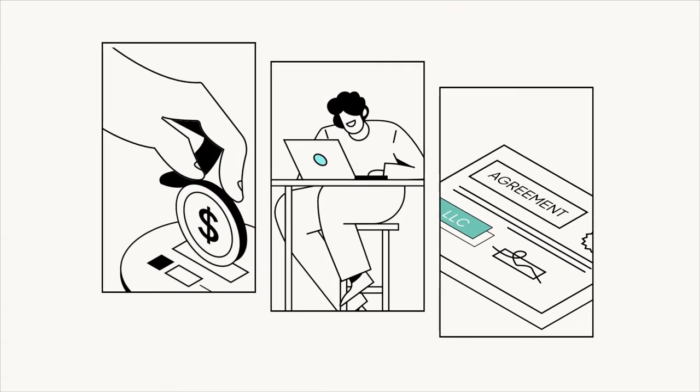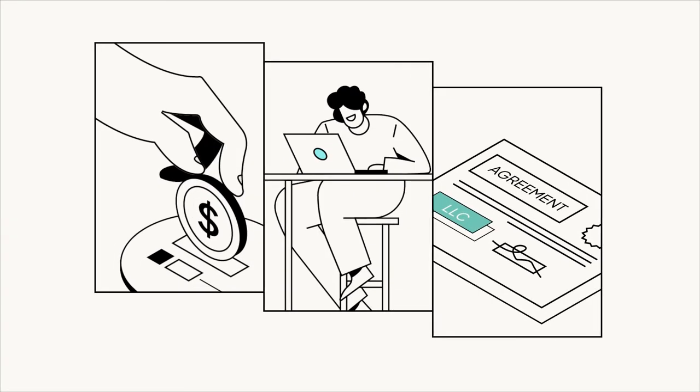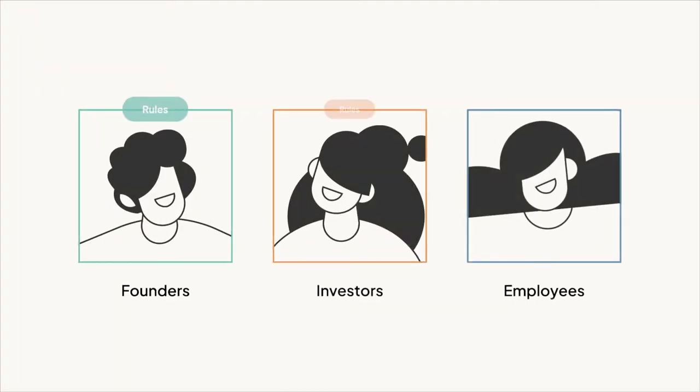Over time, your company grows. And as your company grows, you'll start issuing all different kinds of equity ownership — from shares to rights to ownership — to different people that are involved in the business, like employees, investors, and advisors. And all of these shares that you give to people are going to have different types of complex rules attached to them. So long story short, your cap table can get pretty complicated pretty fast.